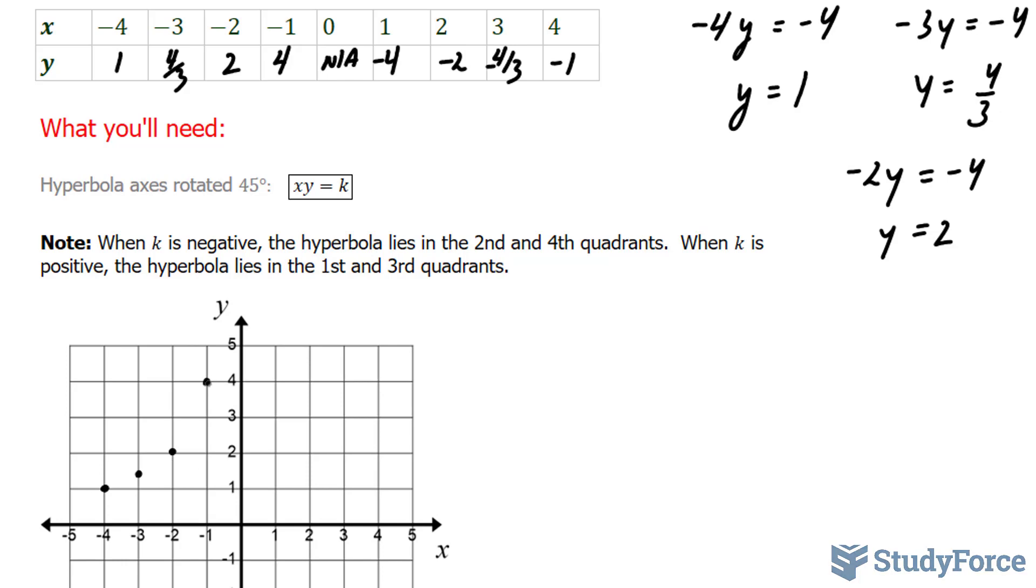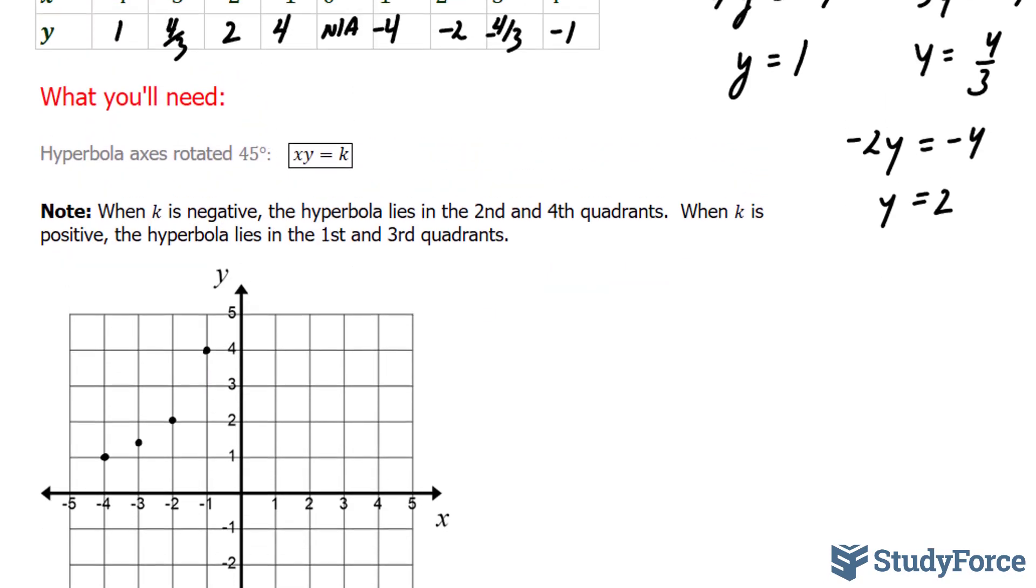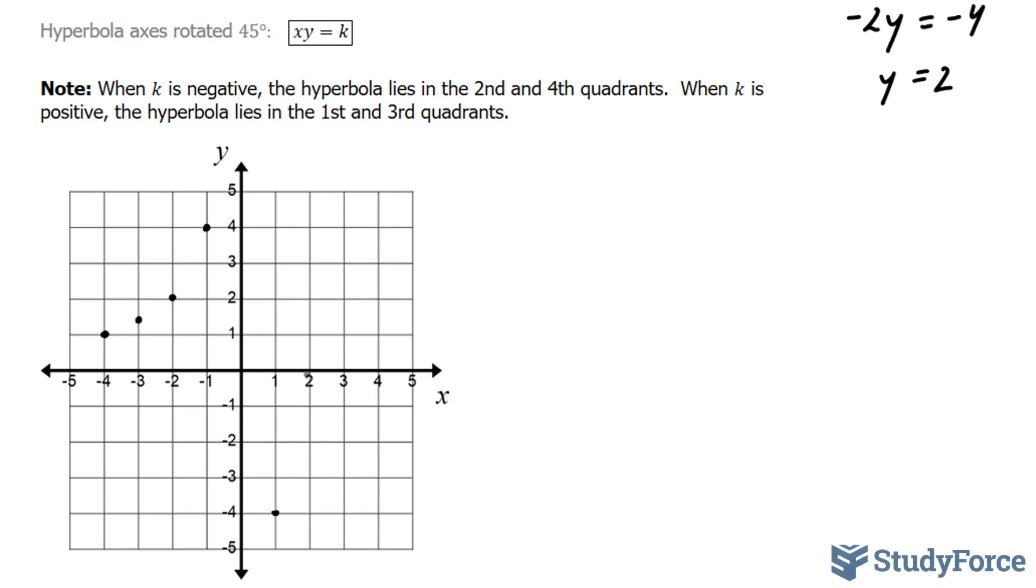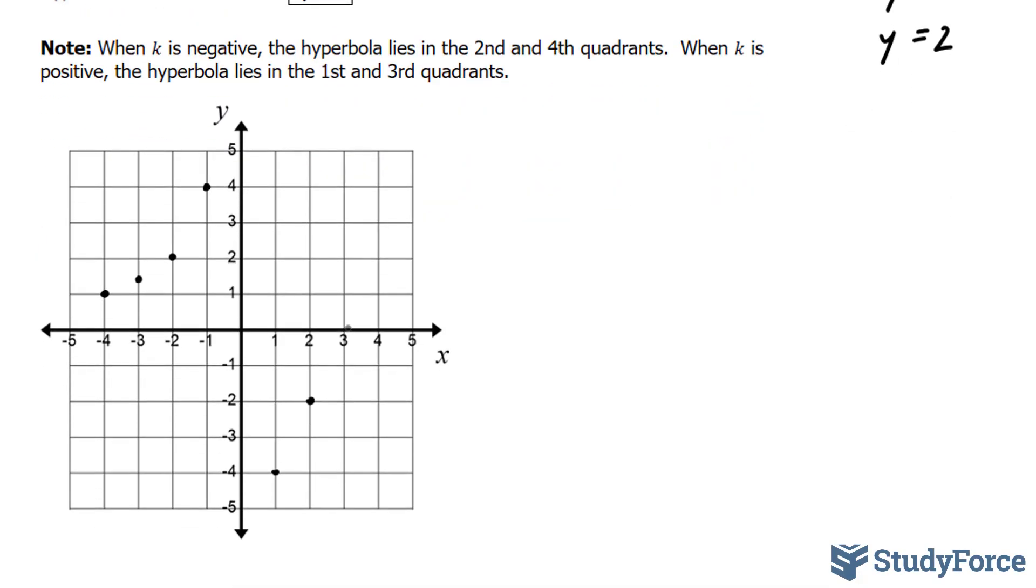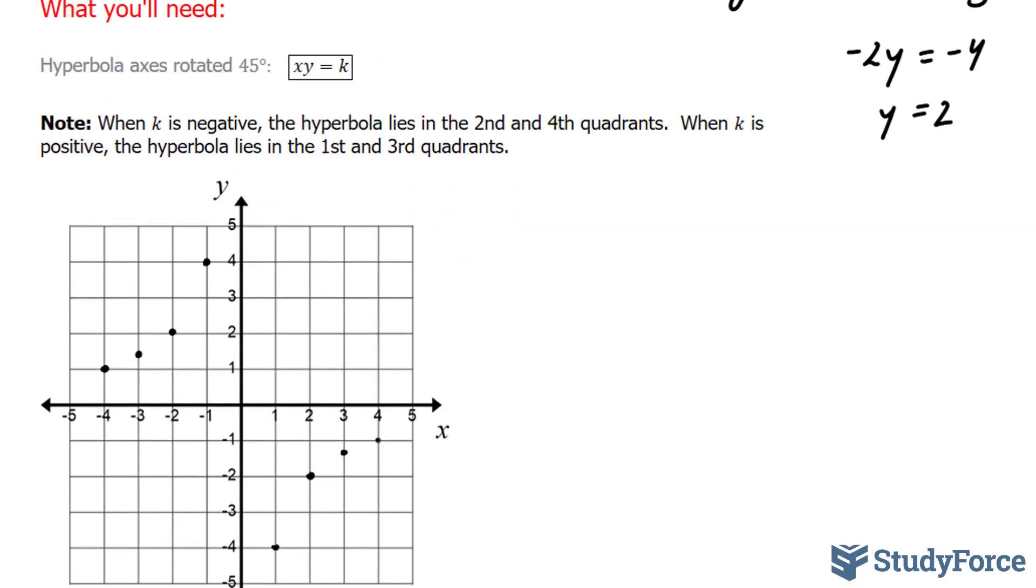At 0, we have no output. At x is equal to 1, we have negative 4. At 2, we have negative 2. At 3, we have negative 1.3. And lastly, at 4, we have negative 1.